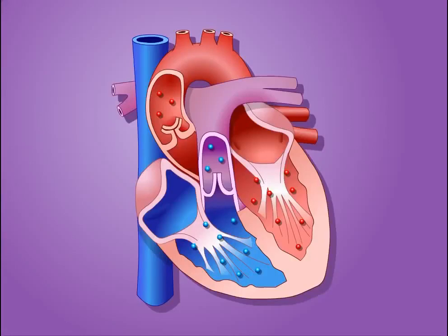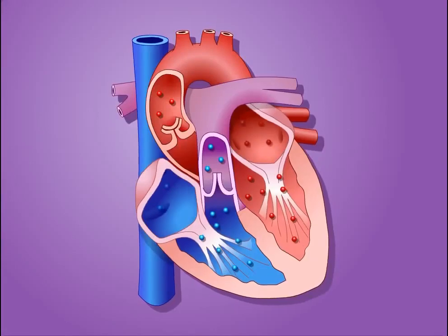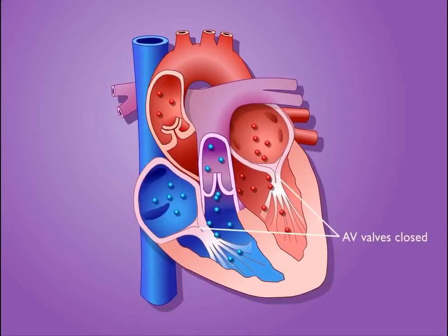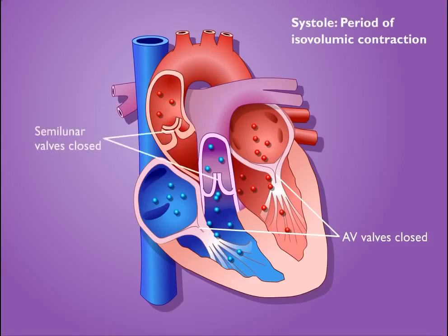Ventricular contraction causes the atrioventricular valves to close, which signals the beginning of ventricular systole. The semilunar valves were closed during the previous diastole and remain closed during this period.